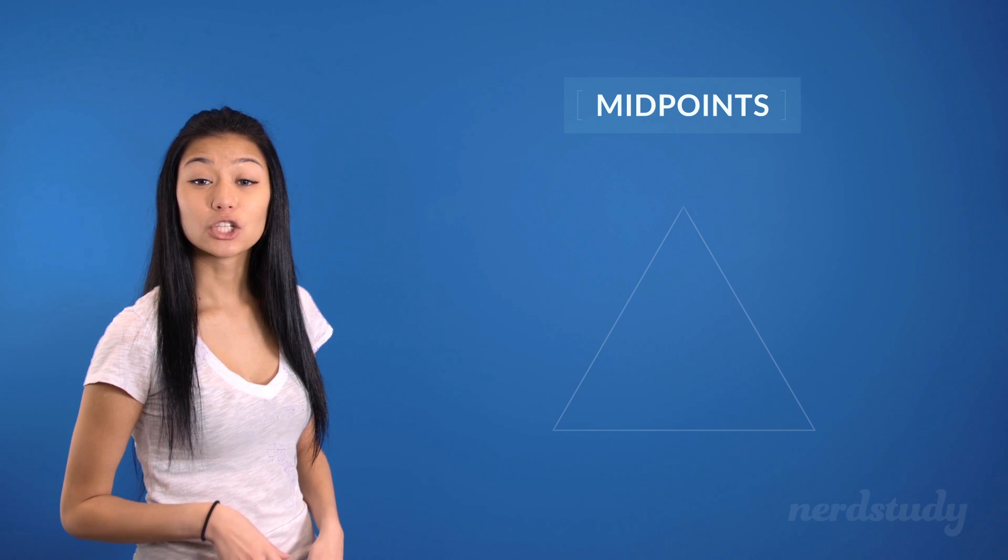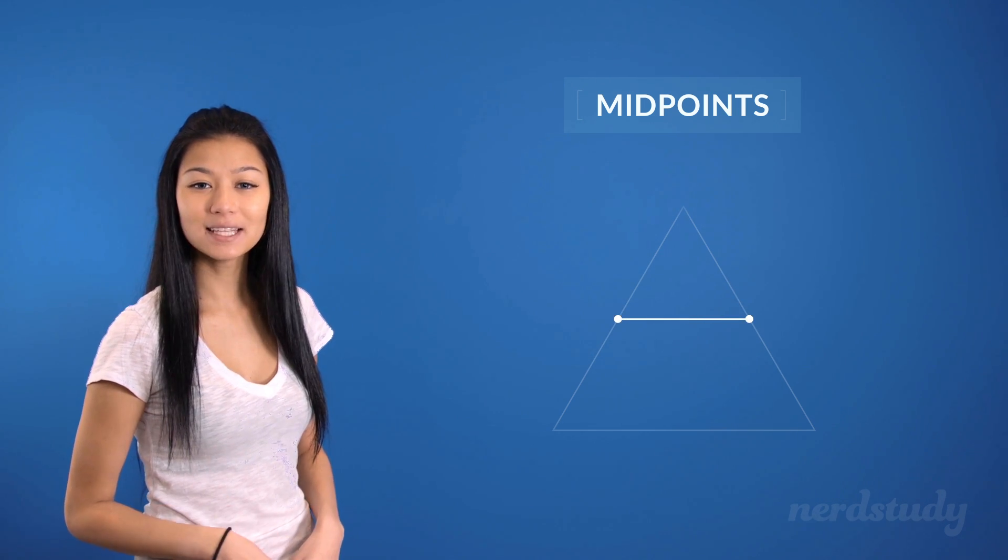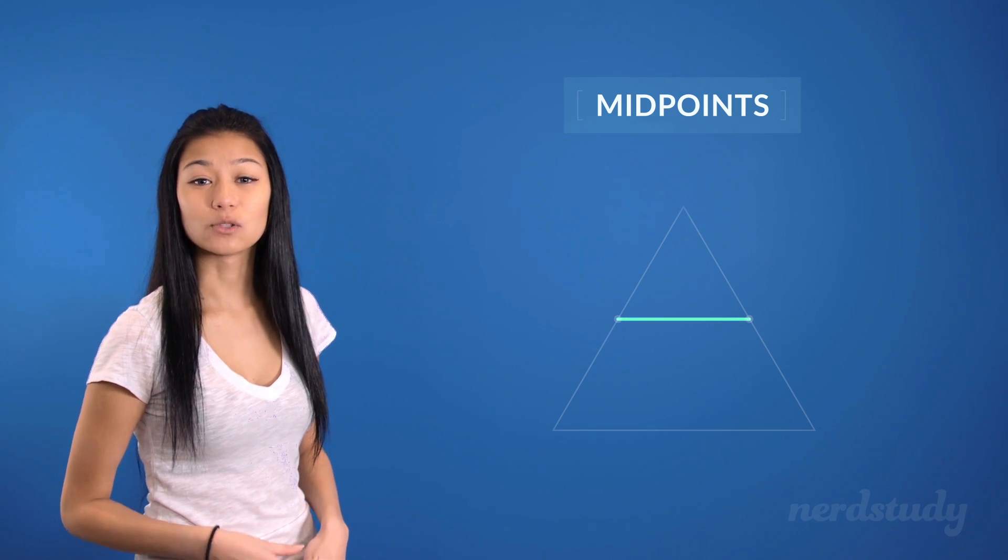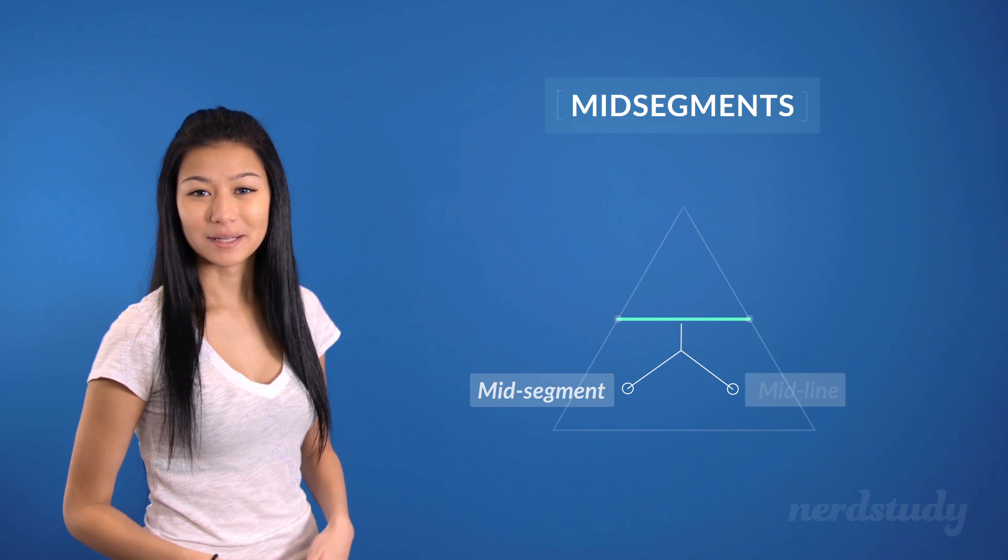Now, if we take two midpoints in a triangle and connect them with a line segment, like so, then this line is what we call a mid-segment, or a mid-line.